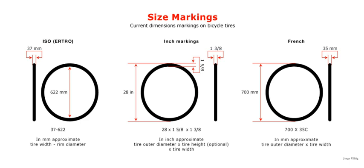A typical example of a tire marking according to ISO 5775-1 is 32-597. The first number is essentially the width of the inflated tire minus any tread. The second number is the inner diameter of the tire when it is mounted on the rim. The corresponding circumference can be measured with a suitably narrow tape inside the rim.